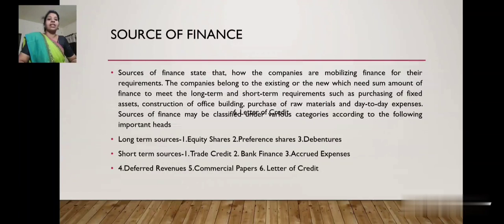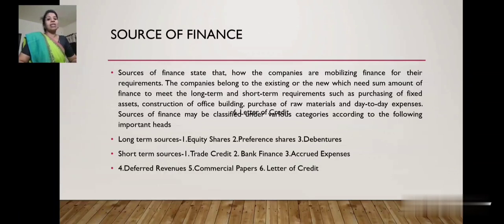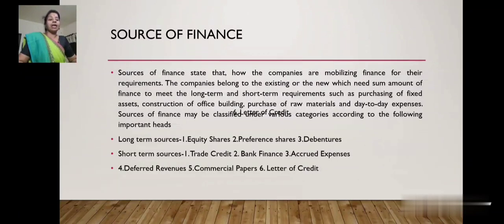Next, sources of finance. Sources of finance refer to how companies mobilize finance for their requirements. Companies — whether existing or new — need finance to meet long-term and short-term requirements such as purchasing fixed assets, construction of office buildings, purchase of raw materials, and day-to-day expenses. Sources of finance may be classified into two categories: long-term and short-term. Long-term sources include equity shares, preference shares, and debentures. Short-term sources include trade credit, bank finance, accrued expenses, deferred revenues, commercial papers, and letters of credit.